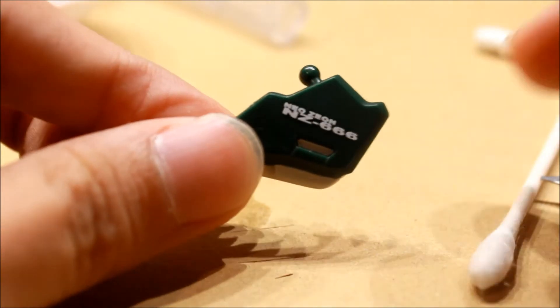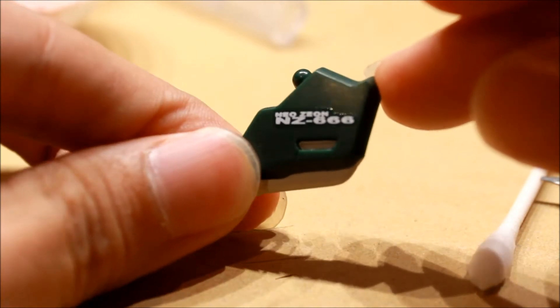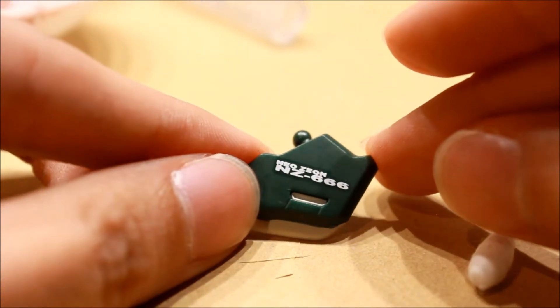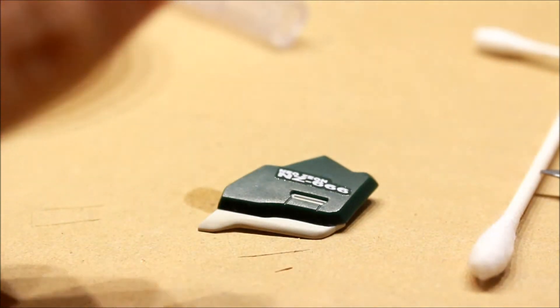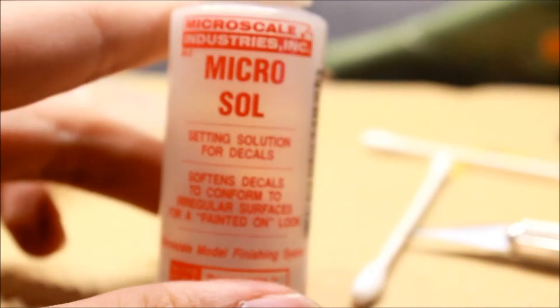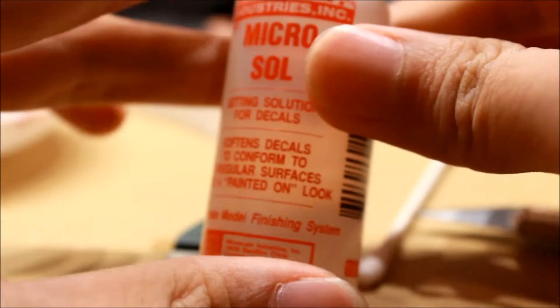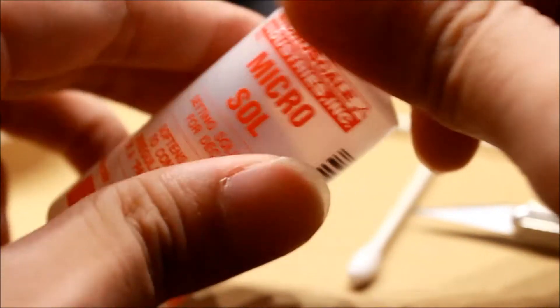So let's say you finished all the decal applications that you wanted to add onto a certain part. Now what you need to do next is - remember how I told you guys I am using Microsol? This is to soften the decals.